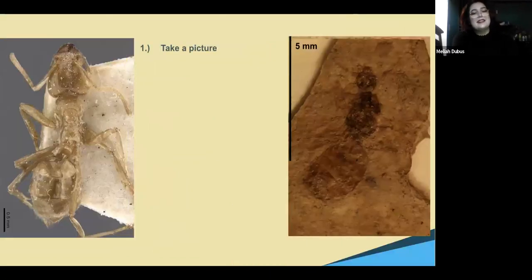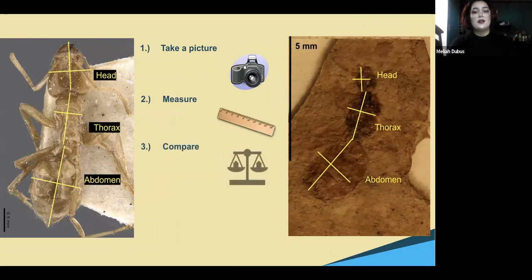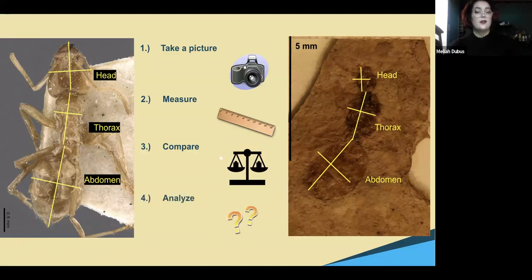We first took high resolution pictures using Helicon Focus, Helicon Remote, and a Stack Shot setup. Then we measured the pixels using ImageJ and converted them to millimeters using a scale bar. We then used our data to compare the ants of the Eocene to modern day ants. When we noticed a significant difference, we looked into it further for reasoning or an answer as to why they were different.